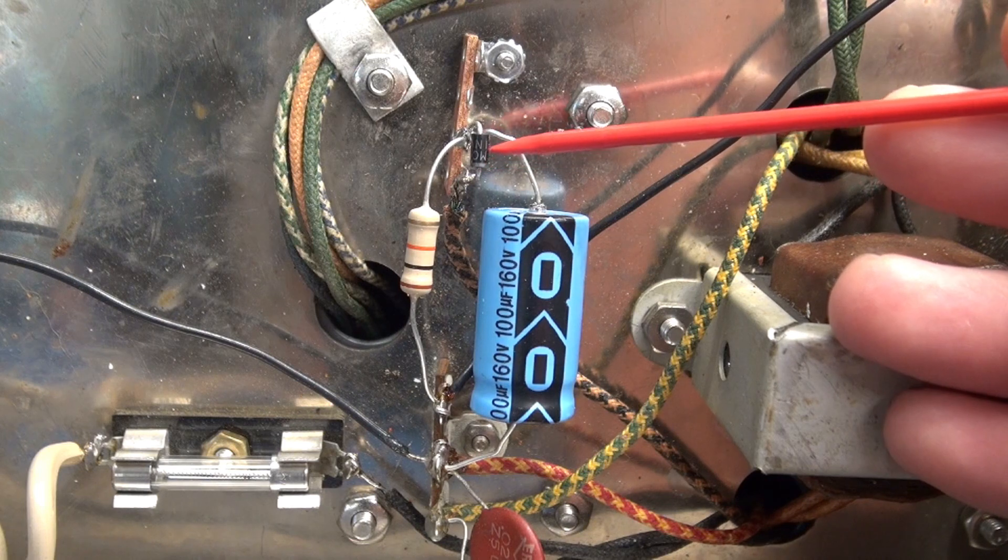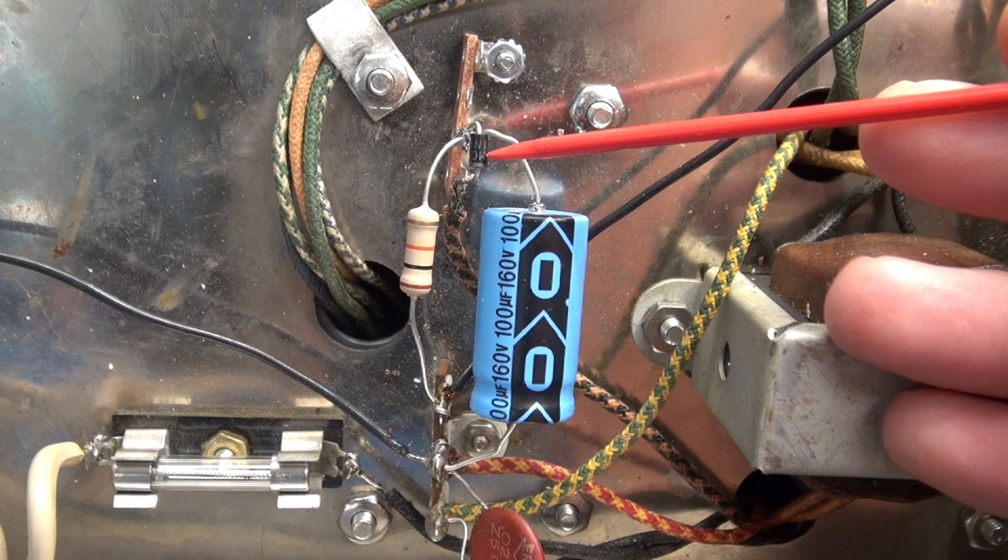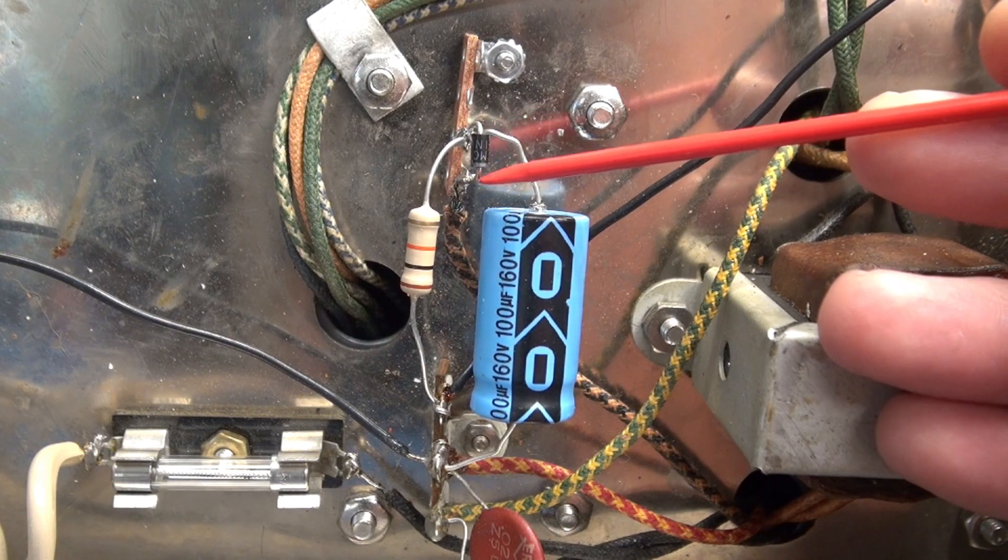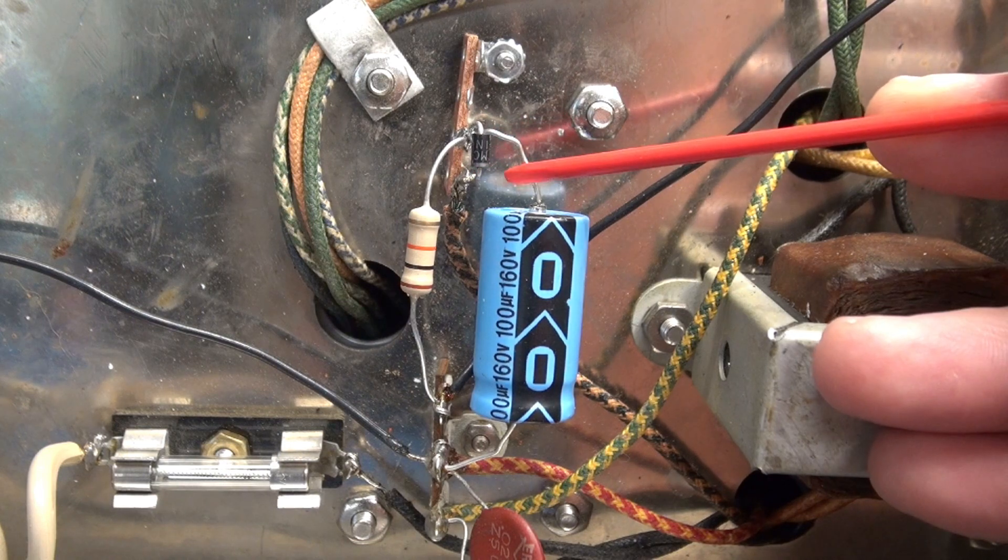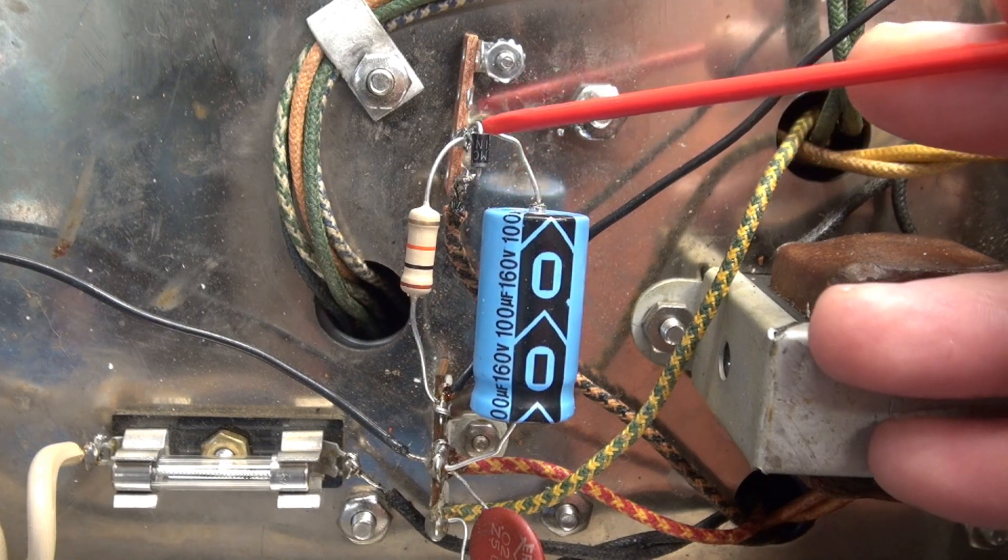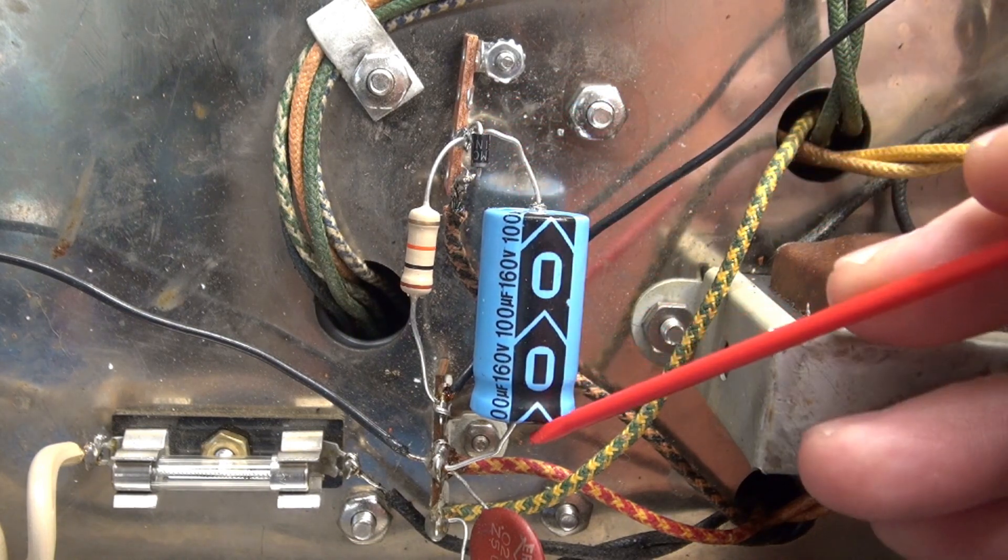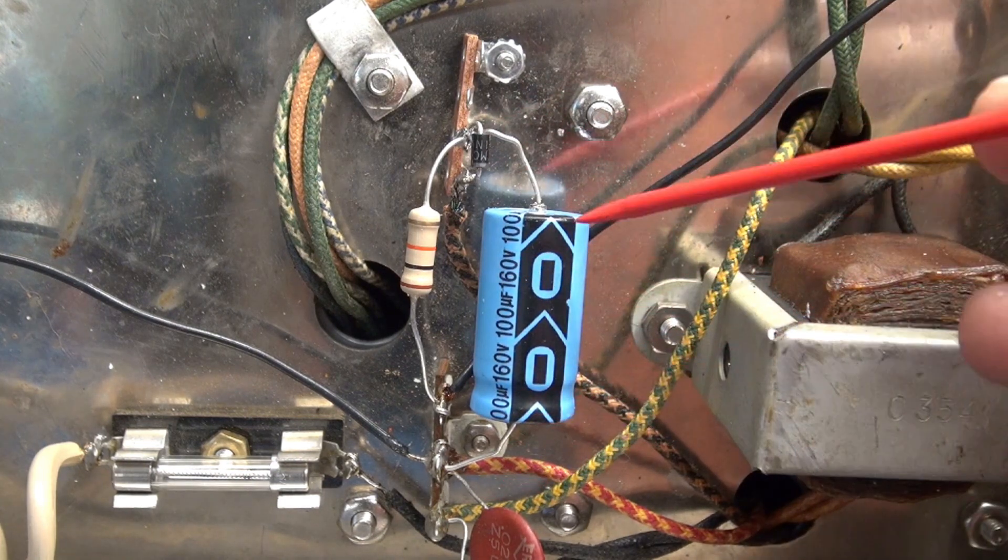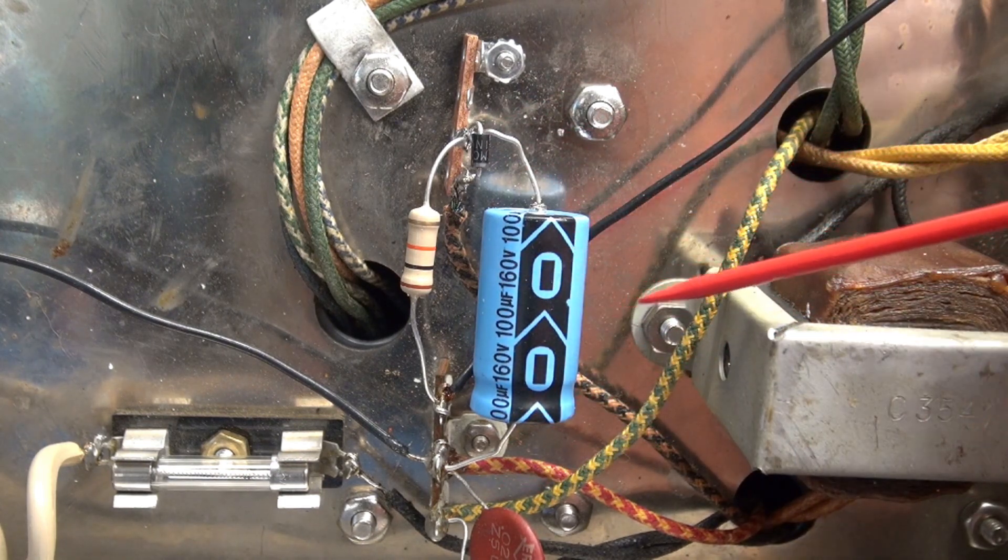So, there is the 1N4007 diode. You see the way the band is facing. And then your filter cap negative side goes here. And then the positive side goes to ground. Don't reverse that or you could damage your amp.